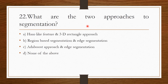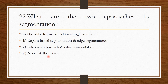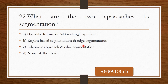Question 21: What are the two approaches to segmentation? Options: Hard-like feature and 3D rectangle approach; Region based segmentation and edge segmentation; Adavost approach and edge segmentation; None of the above. The correct answer is Option B — region based segmentation and edge segmentation.